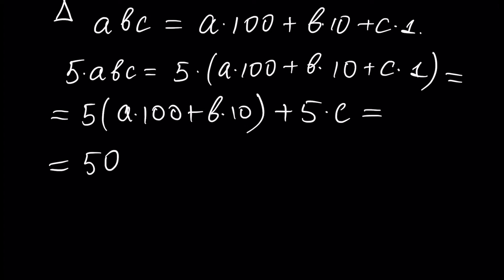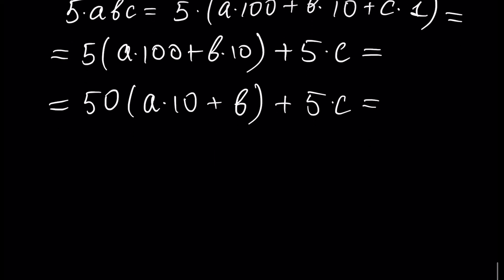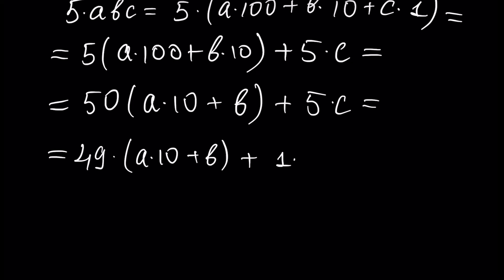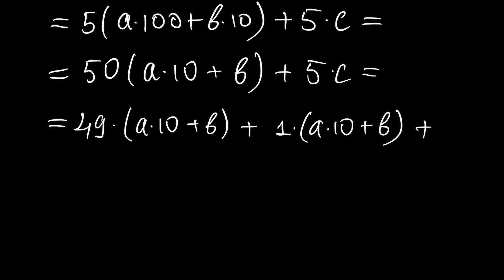We rewrite as 50 times (10A plus B) plus 5C. Now we write 50 as 49 plus 1 times the bracket, so we get 49 times (10A plus B) plus 1 times (10A plus B), and 5C we write as 7C minus 2C.